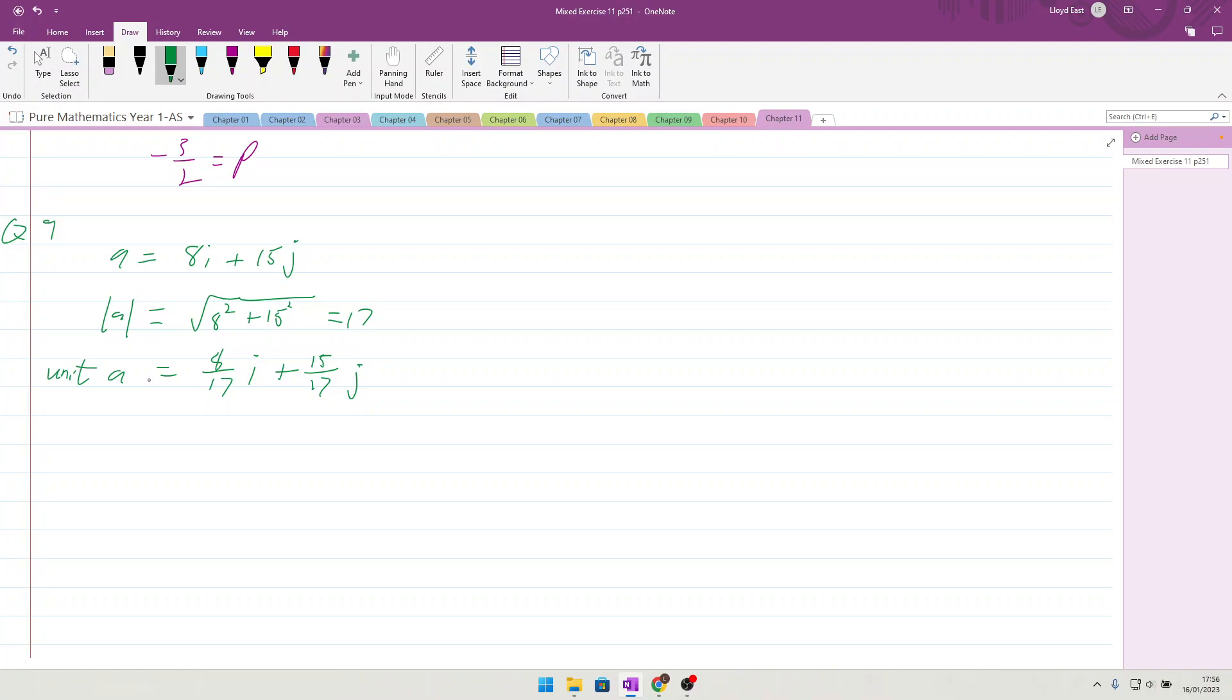The angle that it makes with i is just going to be theta equals the tan inverse of the opposite which is 15 over 8, and the tan inverse of that is 61.9 degrees to one decimal place.